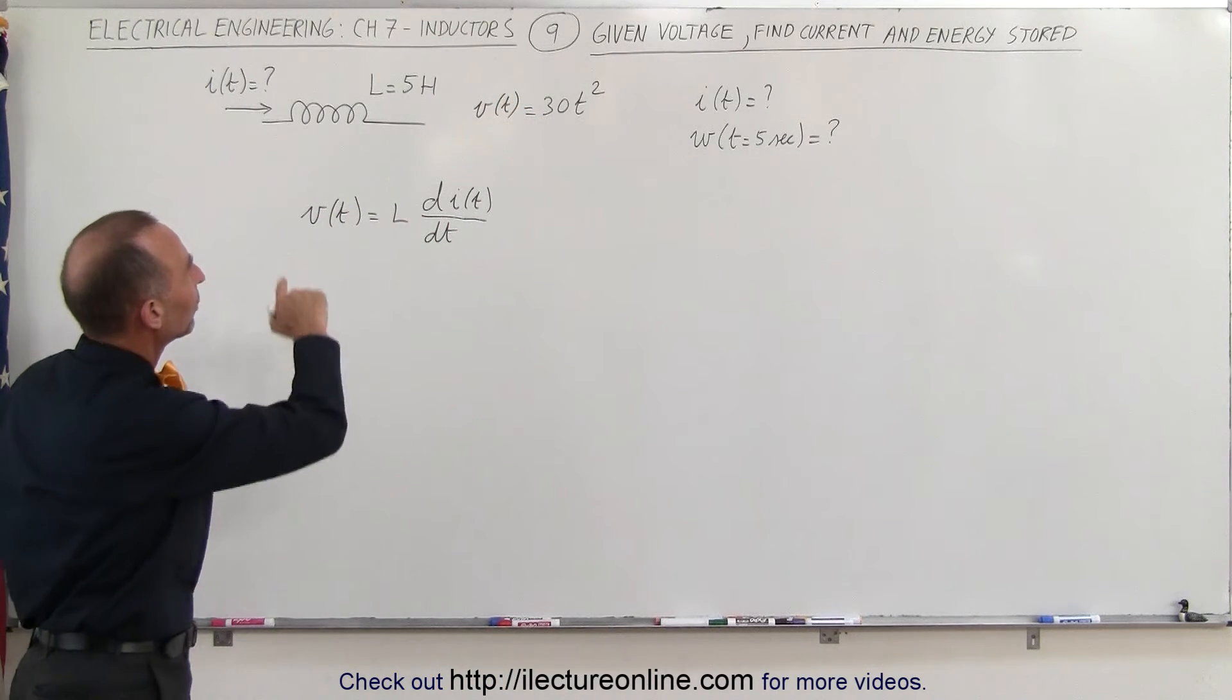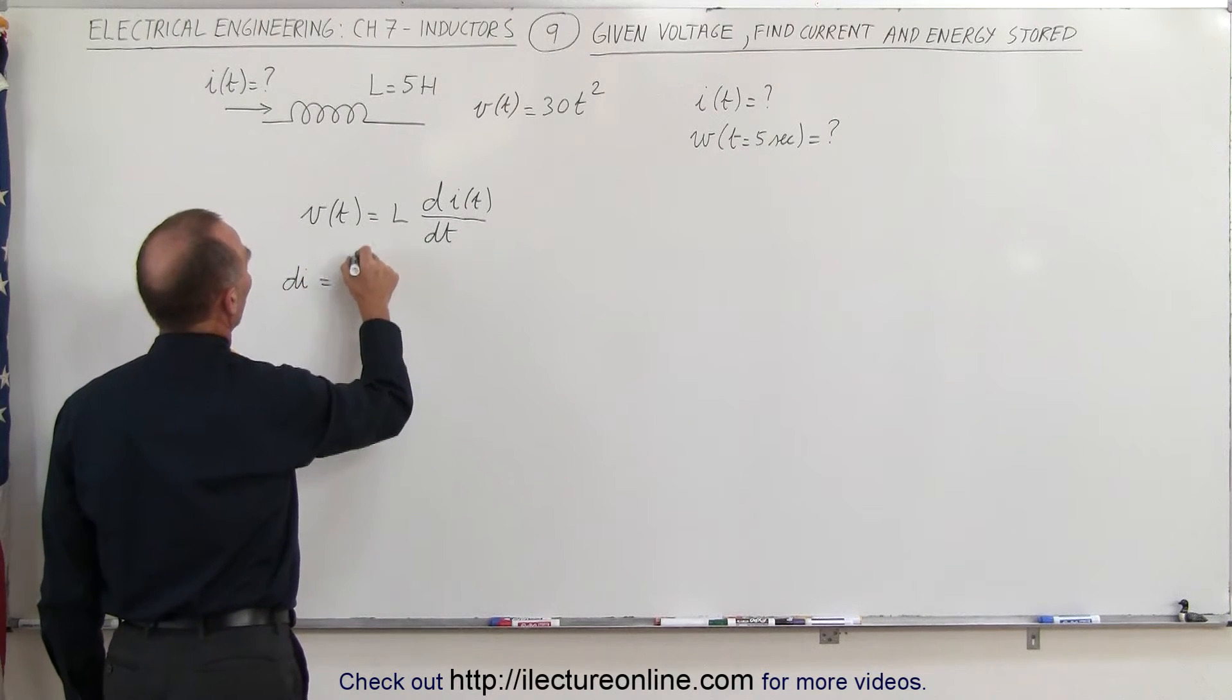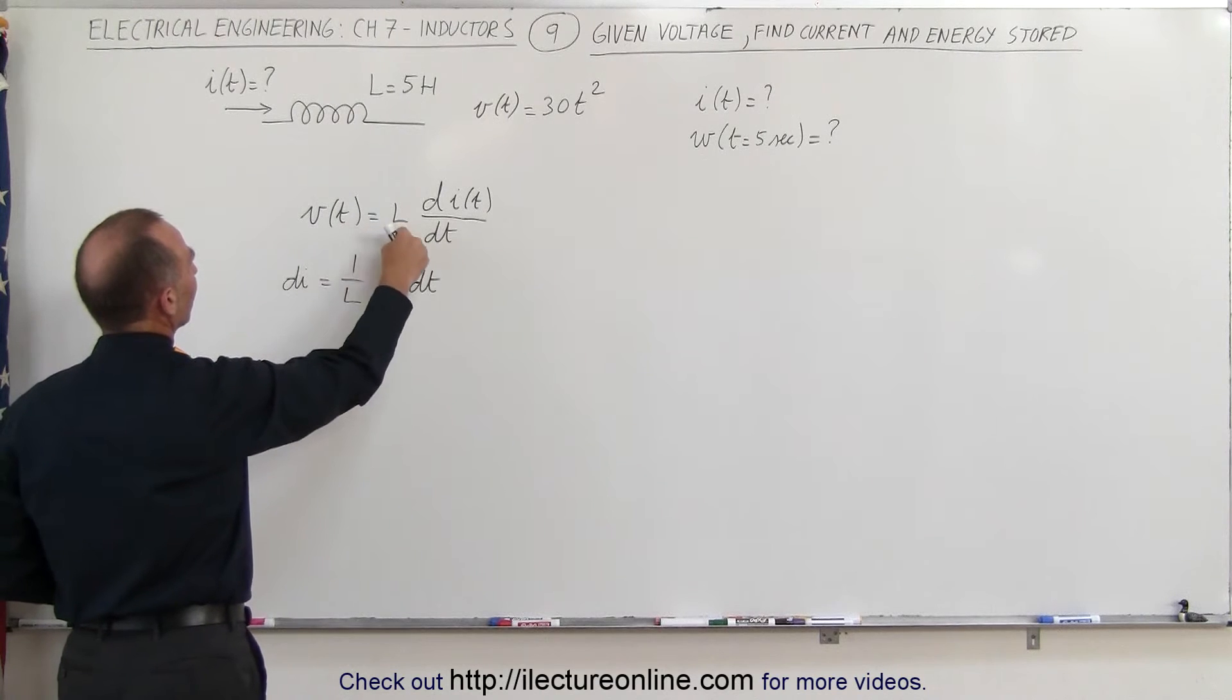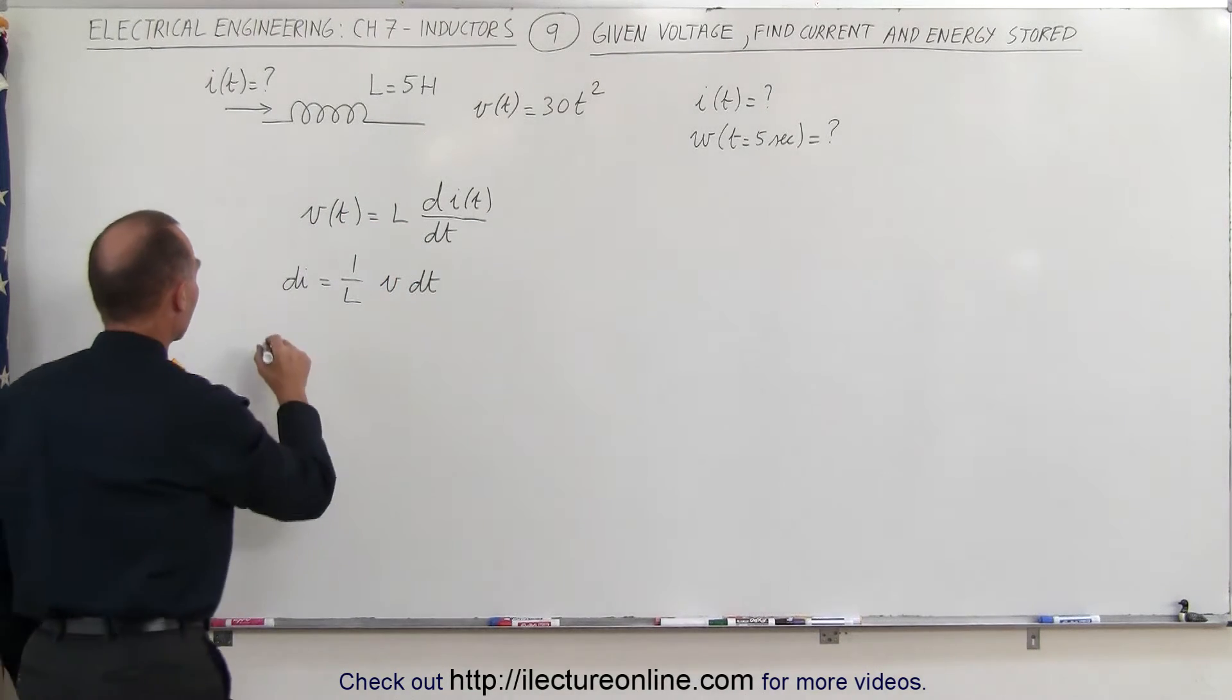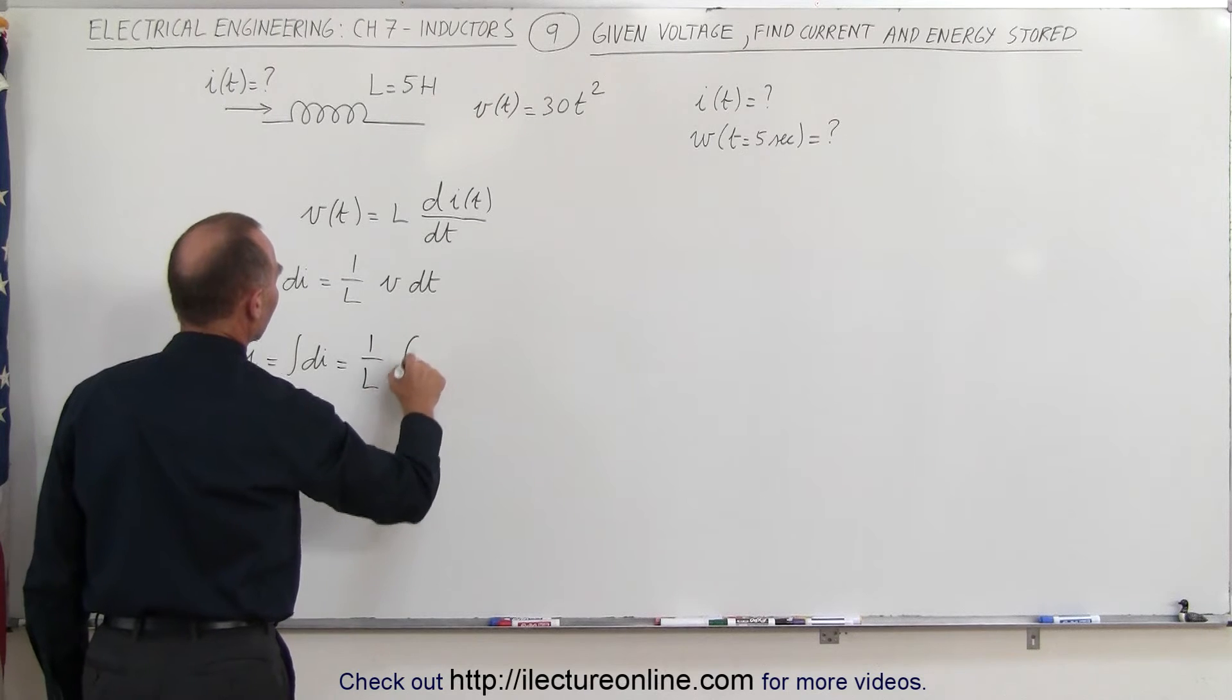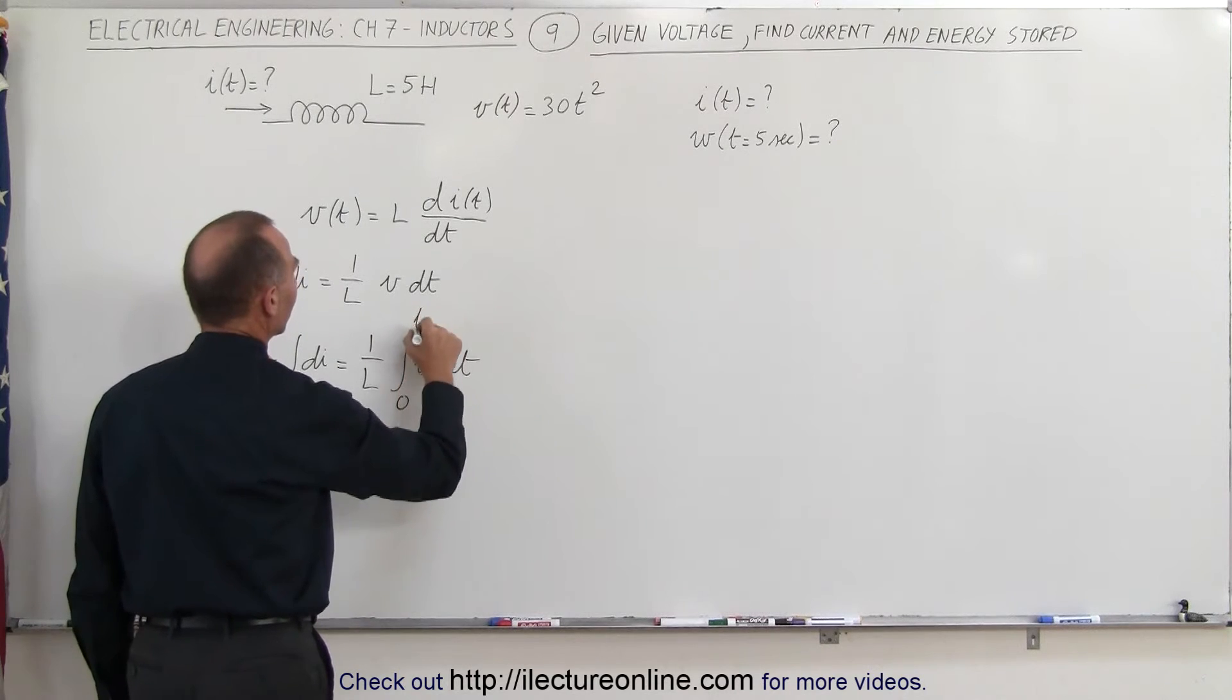So what we need to do is rearrange this equation where we have di by itself. We can say that di is equal to one over L times V dt. So we've rearranged the equation, put the dt over here, put the L down here and then turn the equation around. Now we want to find the current I which is equal to the integral of di, which is equal to one over the inductance times the integral of V times dt. We're going to integrate that from time equals zero to time equals T.